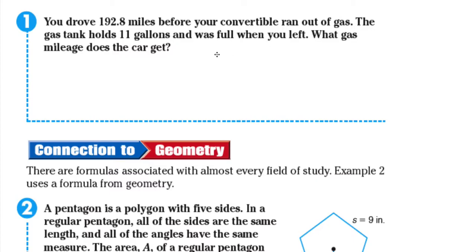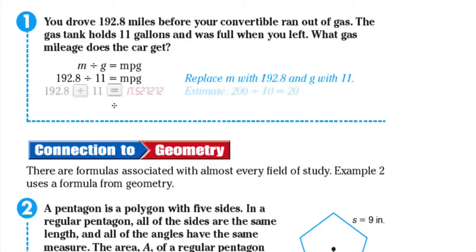Again using our formula which is M divided by G equals miles per gallon, we substitute 192.8 for M and 11 gallons for G. That should give us using our calculator 17.527272. Estimate 20 divided by 10, and it should be around 20, and this is close enough to 20. So the car gets about 17.5 miles per gallon.